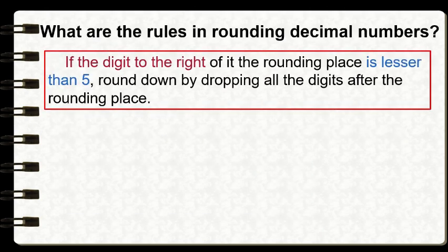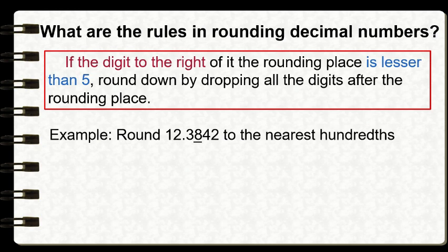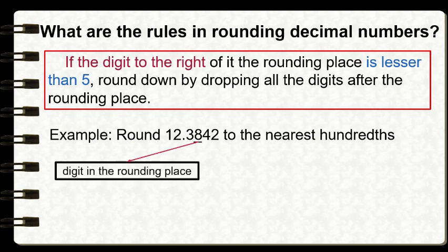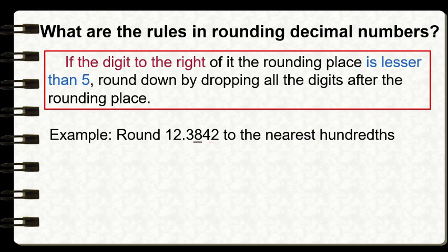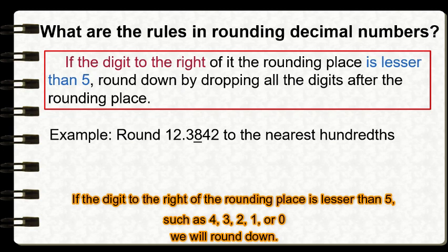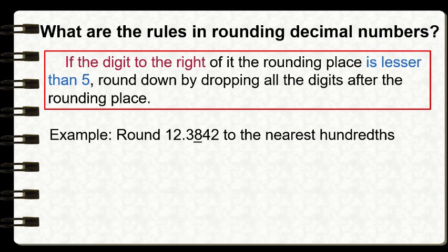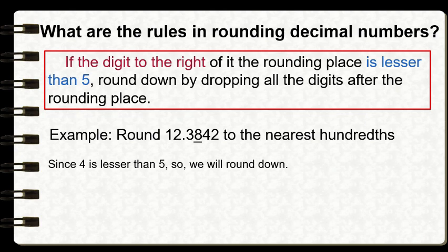What if the digit to the right of our rounding place is less than five? For example, round twelve and three thousand eight hundred forty-two ten-thousandths to the nearest hundredths. Eight is the digit in the rounding place and four is the digit to its right. The rule states that if the digit to the right of the rounding place is less than five, we round down — meaning we retain the digit in the rounding place and drop all digits after it.